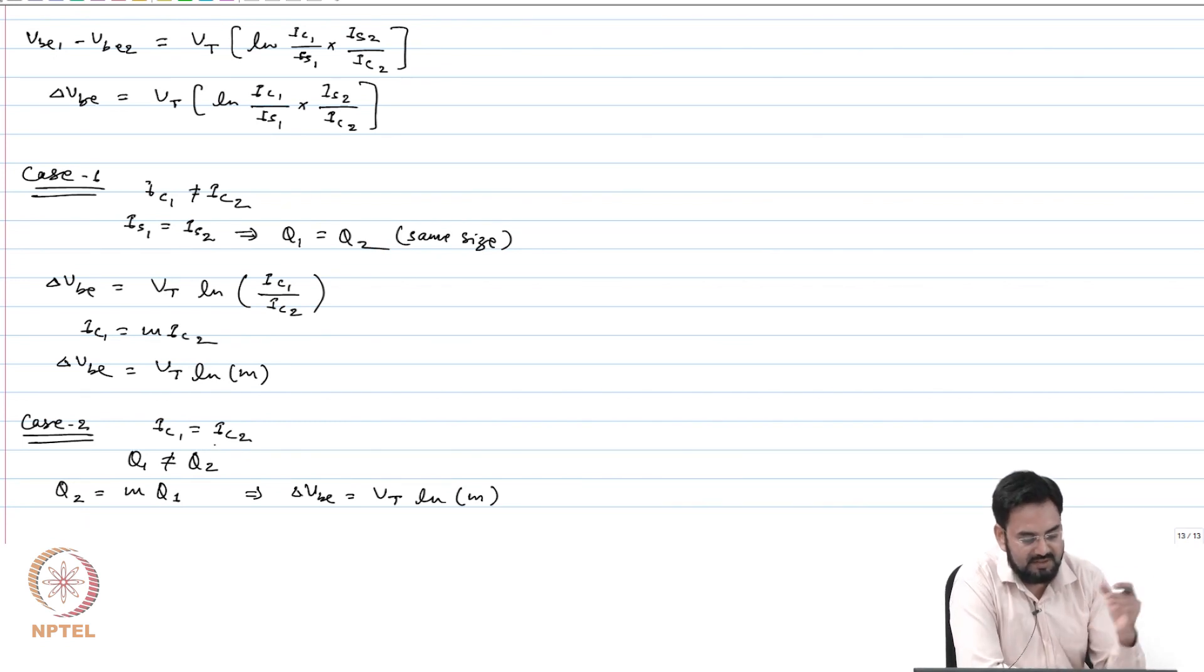So we rely only on the difference between the reverse saturation current by introducing the area difference between the transistors. So now you can change the area or you can change the currents in the two bipolars and you can change the slope and get the bandgap.